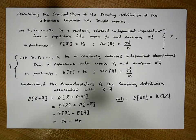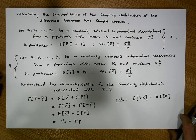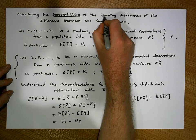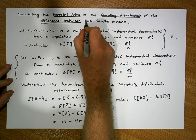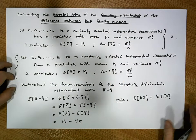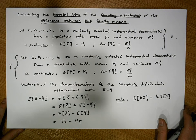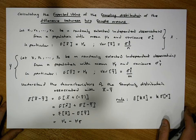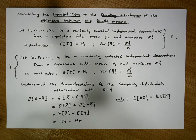This was Jonathan Lambert with the Mathematics Development and Support Centre at the National College of Ireland. I hope this video was intuitive in relation to how to calculate the expected value of a sampling distribution for the difference between two sample means. The next video in this series is going to look at how we calculate the variance of this particular sampling distribution.